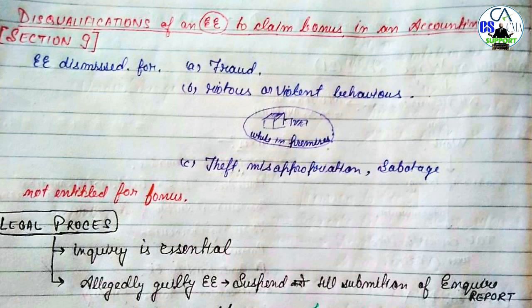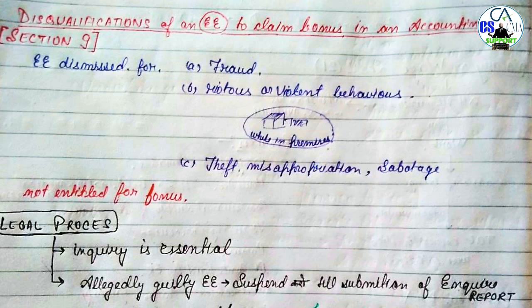Number two: riotous or violent behavior के लिए, establishment के premises के अंदर violent behavior करने की वजह से उसको disqualify किया गया। या फिर employee ने चोरी कर ली, misappropriate कर दिया, या sabotage कर दिया establishment की किसी property को - तो यह सब करने की वजह से उसे disqualify कर दिया गया।